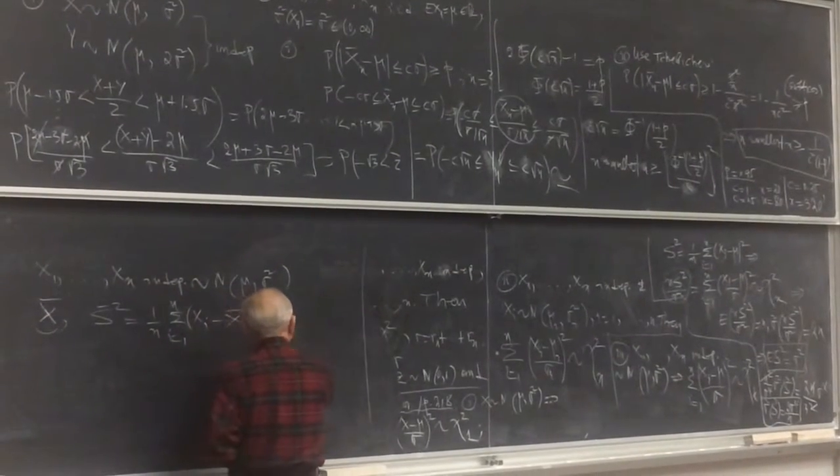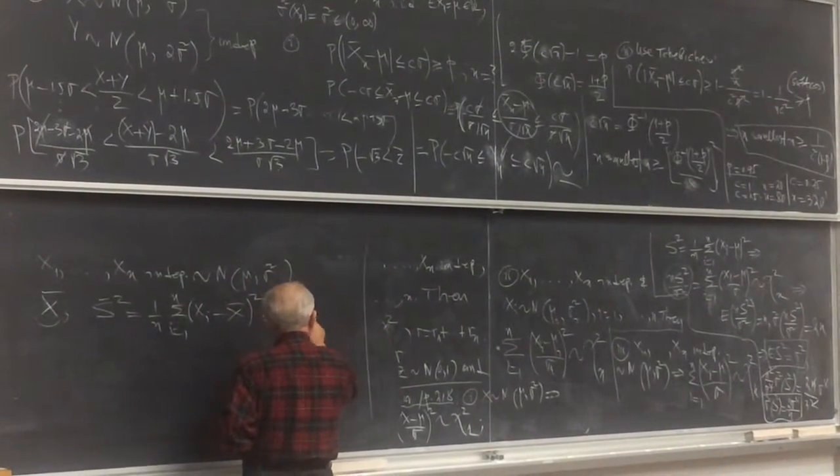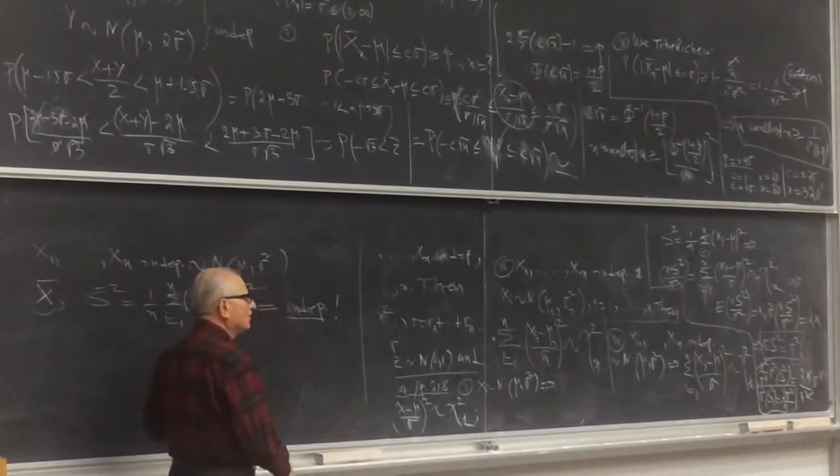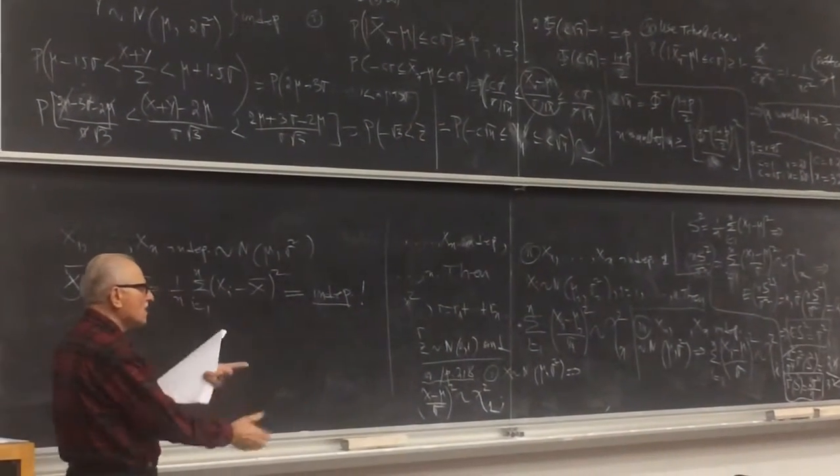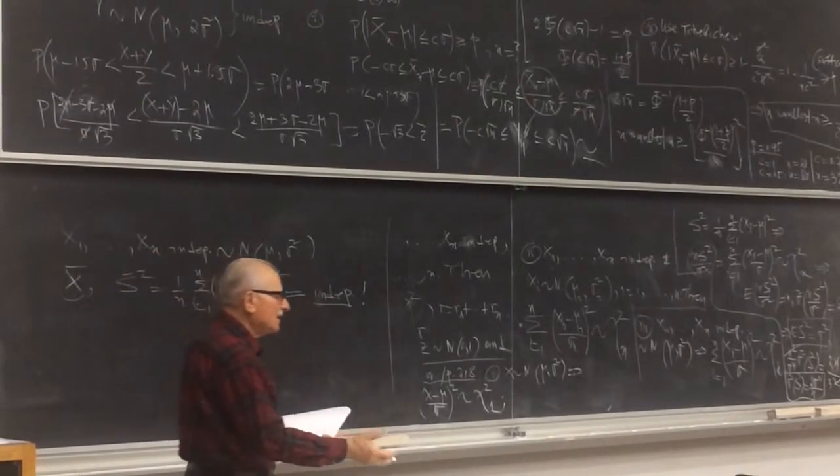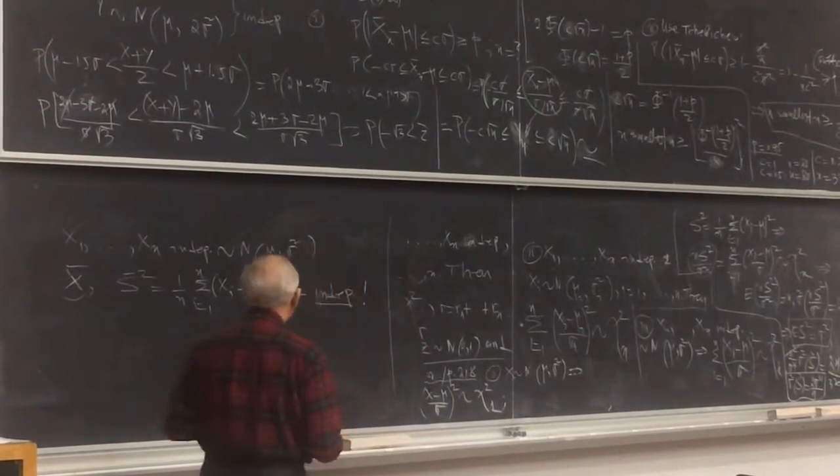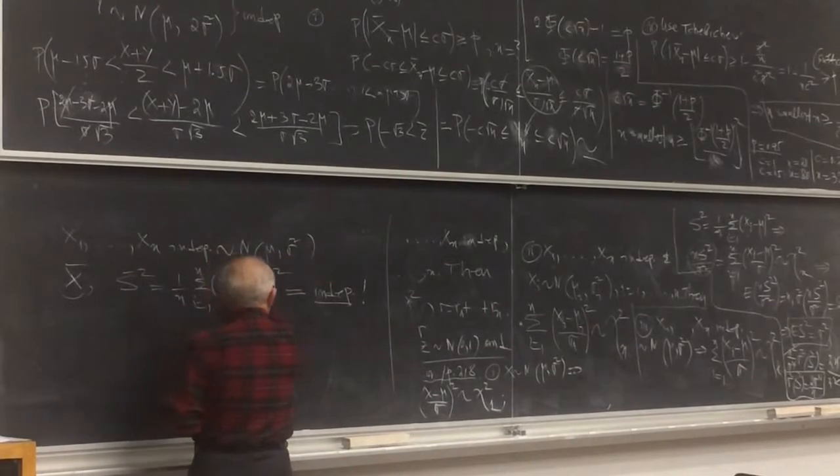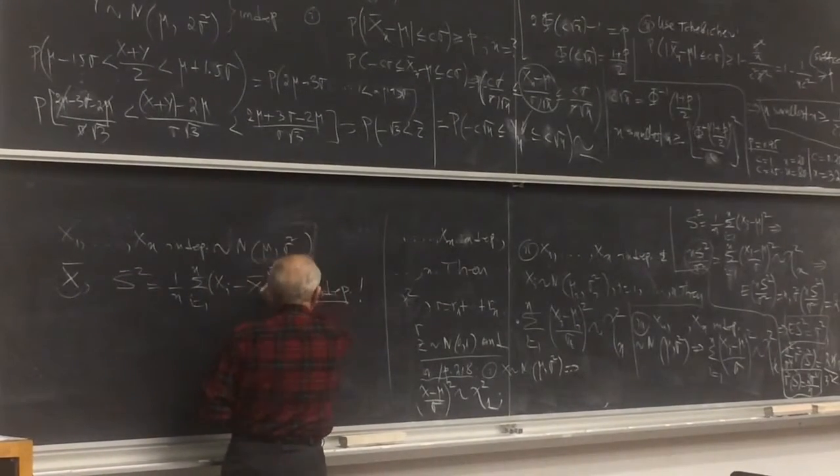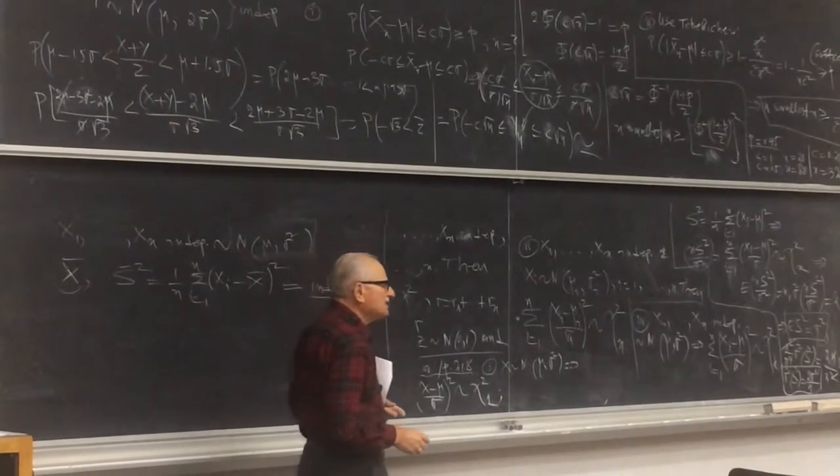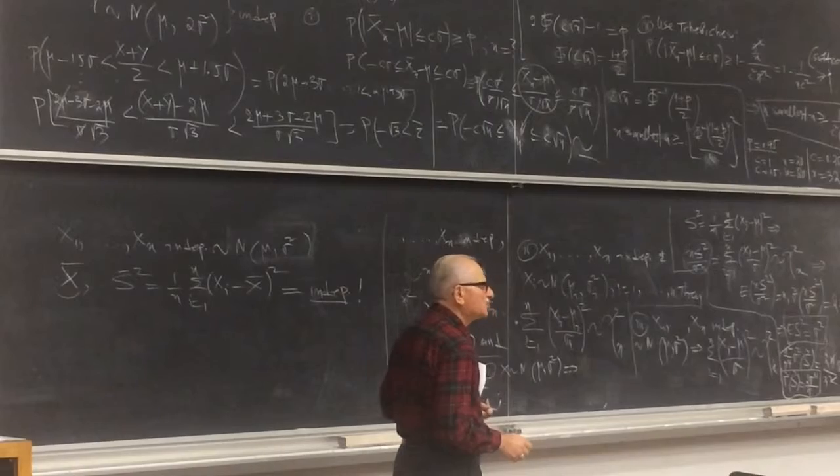The peculiar result is that these random variables are independent. Although we mix them up here, what we get are two random variables that are independent. Now, that is true under normality. If the underlying distribution is not normal, this independence need not be true.